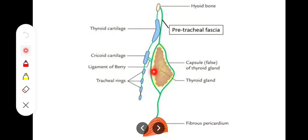The posterior aspect of the thyroid gland is not that strong — it is a potential weakness area. Here, a ligament called the ligament of Berry, or the suspensory ligament of Berry, extends towards the cricoid cartilage and sometimes towards the thyroid cartilage. This is a modification or extension of the posterior aspect of the pre-tracheal fascia on the posterior gland.